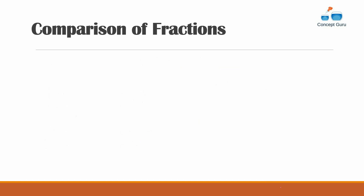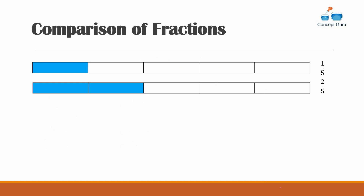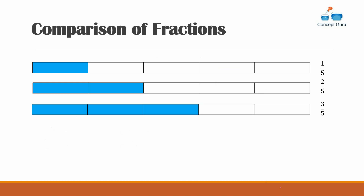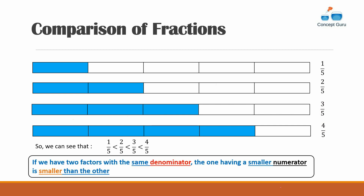Now let's talk about comparison of fractions. Take four strips of the same length and divide each into five equal parts. Shade one portion in the first, two in the second, three in the third, and four in the fourth. This gives fractions one over five, two over five, three over five, and four over five. As you can see, one fifth is less than two fifths, two fifths is less than three fifths, and three fifths is less than four fifths. So if two fractions have the same denominator, the one with the smaller numerator is smaller.